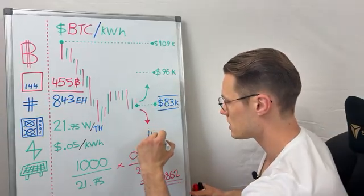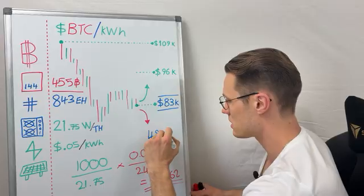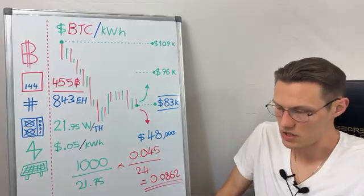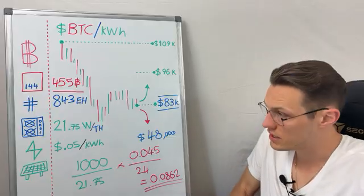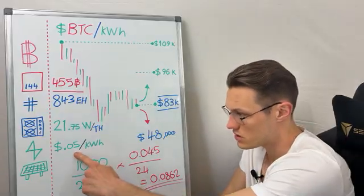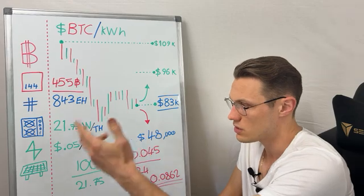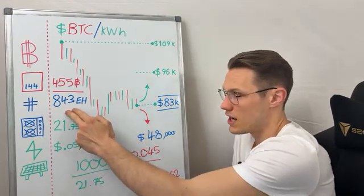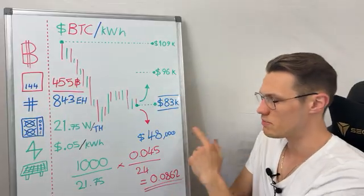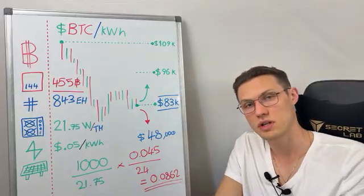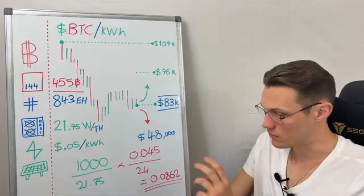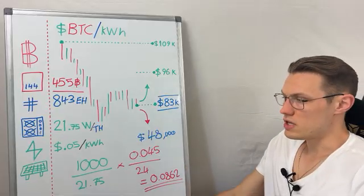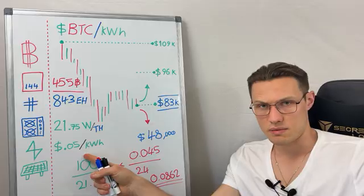So the network average production cost right now — with 5-cent electricity, a 21.75 watts per terahash computer, the current network hash rate and network revenue — is about $48,000 per Bitcoin. The other thing to know is that not every miner is using 5-cent energy; the price on the grid is not always 5 cents.